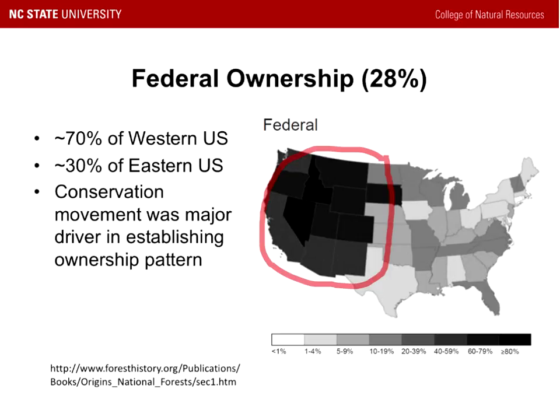National parks were set aside for different reasons than our federal forest land, which was set aside as timber reserves and also to protect the environment. As a result, when the federal government makes policies that impact the environment and our forest land, landowners in the East may not be impacted the same as landowners in the West, because of these large federal holdings in the western part of the U.S.